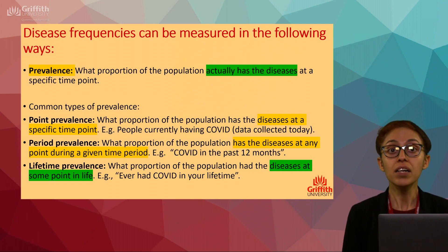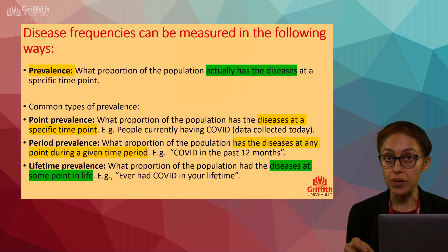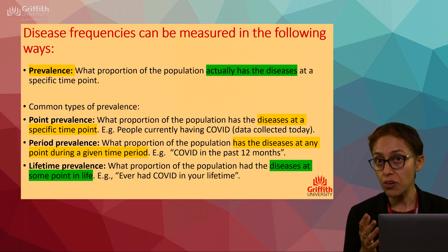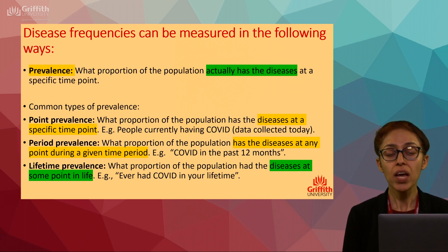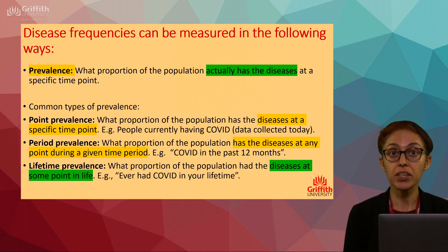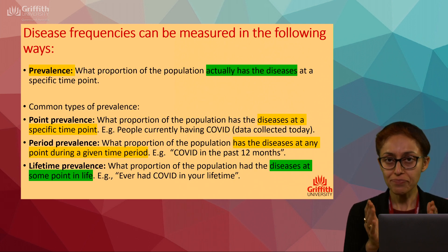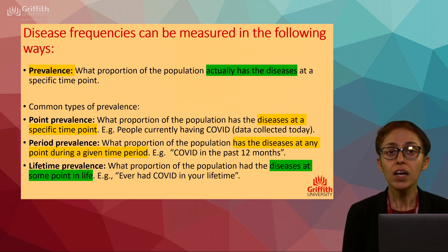Period prevalence is what proportion of the population has the disease at any point during a given time period — for example, in the past 12 months. If your survey questionnaire asks 'have you had COVID in the past 12 months?' that is period prevalence. Point prevalence is cross-sectional — just a snapshot of data collected today.